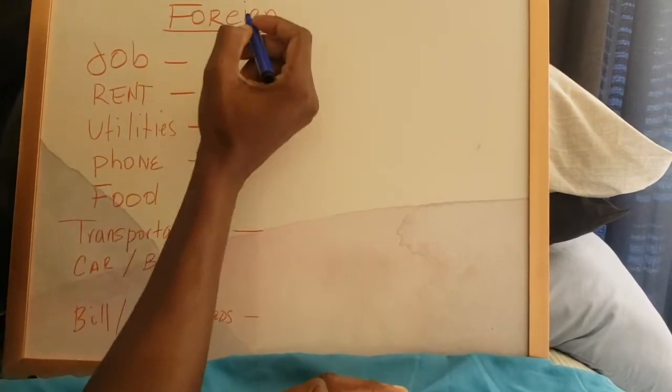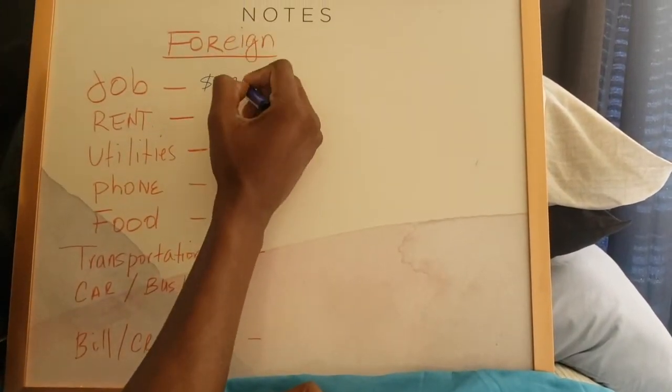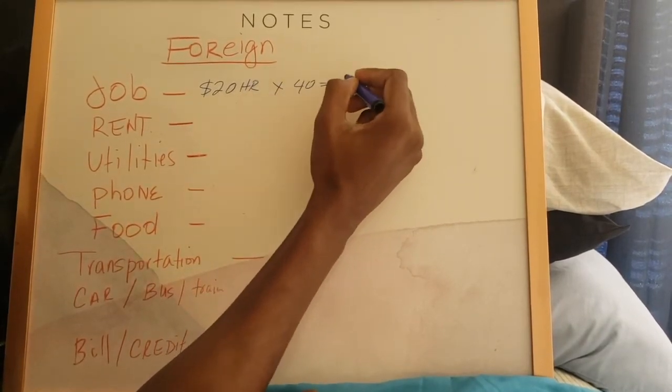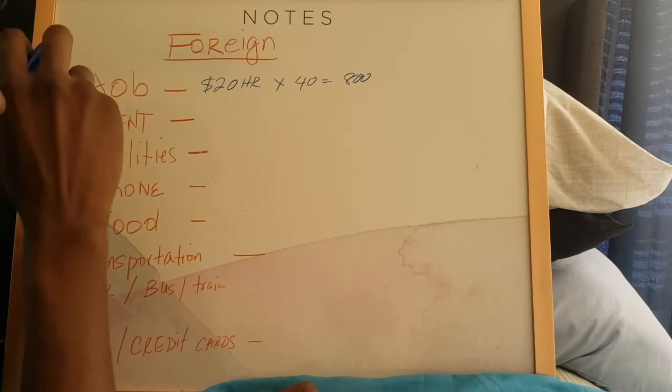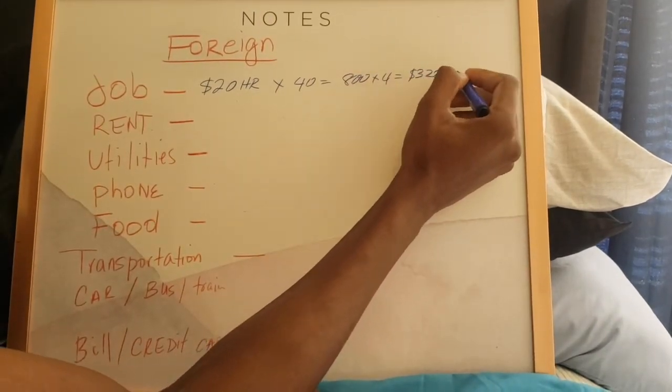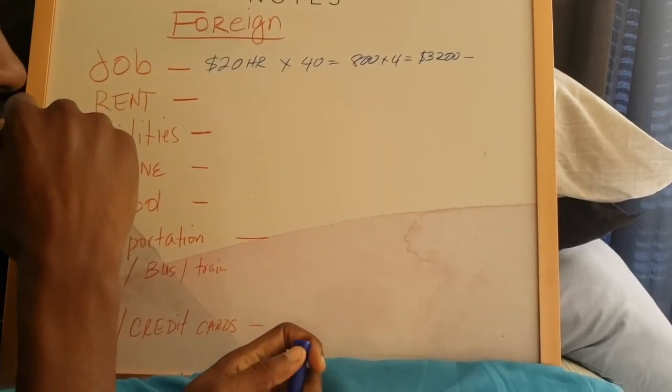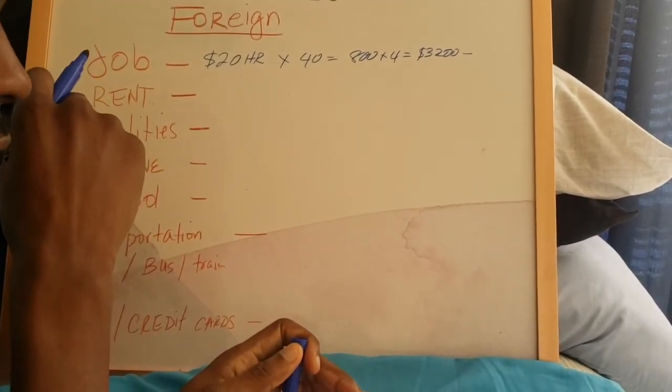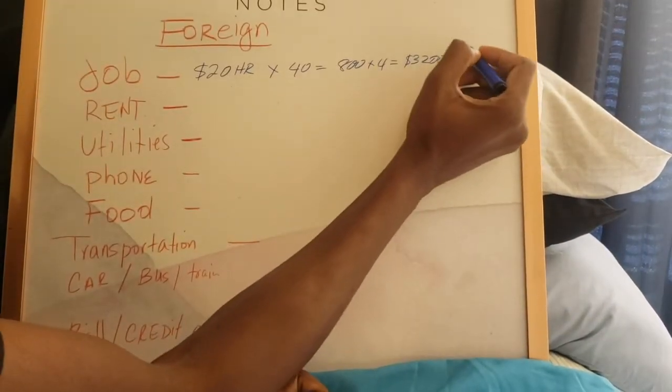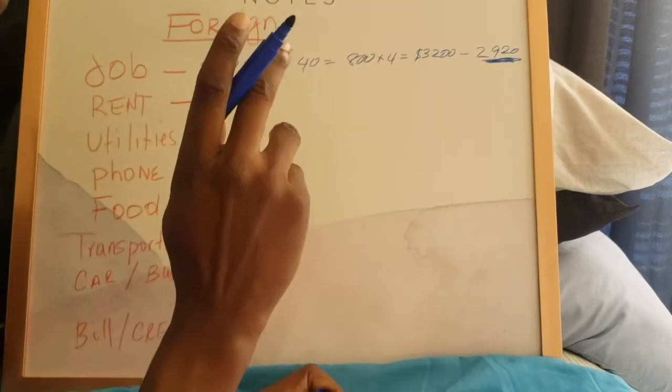The minimum wage I would say is around $20 an hour, the average minimum wage. So let's say you make 40 hours a week, that's about $800 for the week. Times 4 should be $3,200 minus the tax. Tax is roughly around 8.75%, so minus 8.75% for the month, you end up with $2,920. This is what you have to work with for the month.